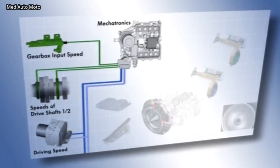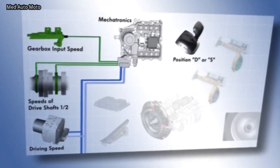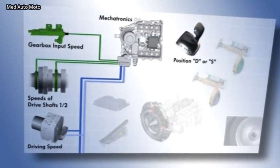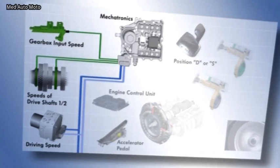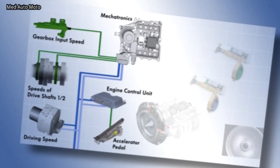This information is then used to calculate the road speed, which is evaluated according to the position of the gear selector lever in D or S. The system detects via the accelerator pedal whether the driver wishes to accelerate or decelerate.